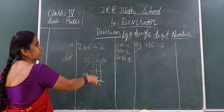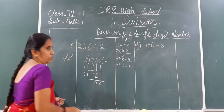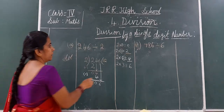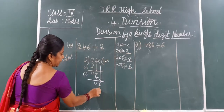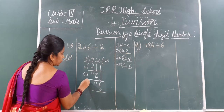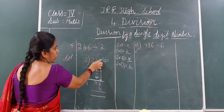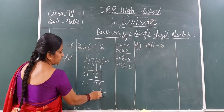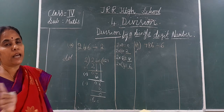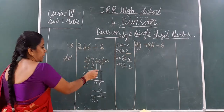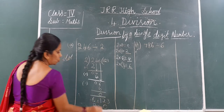Now write the 2 table till you get 6 or more than 6. 3 twos are 6 — we got the same number, so stop there. Circle this 3 and write here. Underline 6 and write under 6. Draw line, do subtraction. And you see — is any number left here? No, nothing. So close it. 6 minus 6 is 0. Now what is the quotient? Q means quotient — remember it. The quotient is 123 and the remainder is 0.